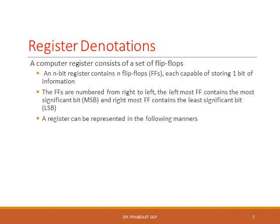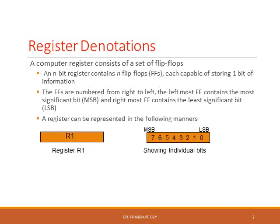A register can be represented in the following manner. We can simply create a rectangle and write R1 inside it, meaning it is the R1 register. Similarly, we can show individual bits of a register from 0 to 7. It is an 8-bit register where position 0 is the LSB and position 7 is the MSB.